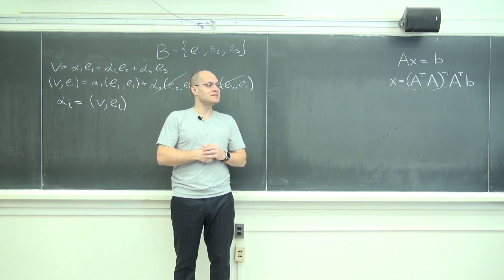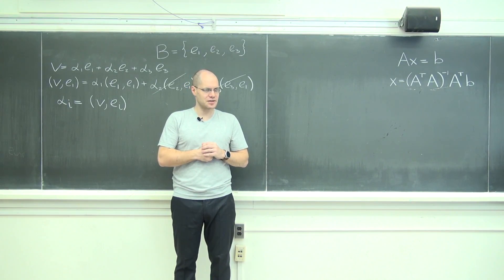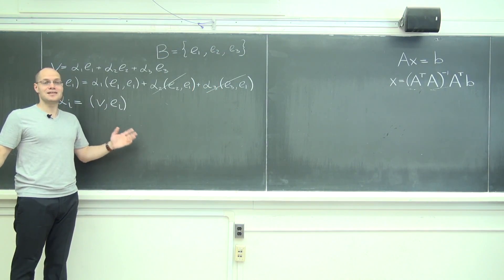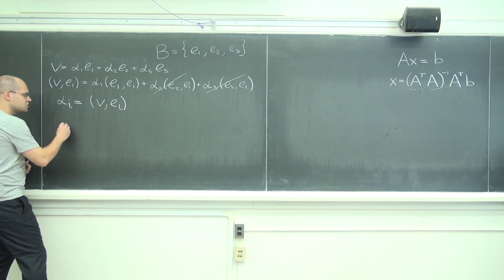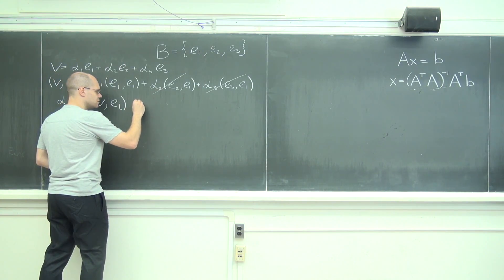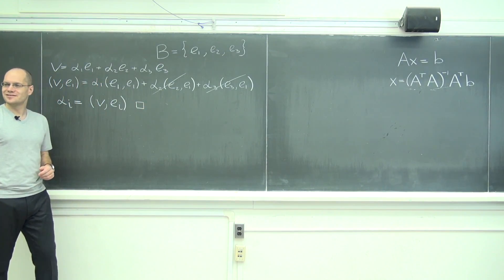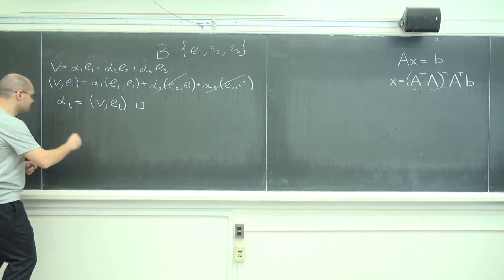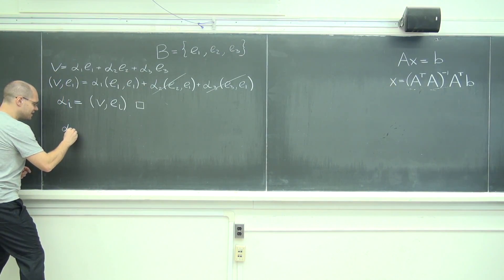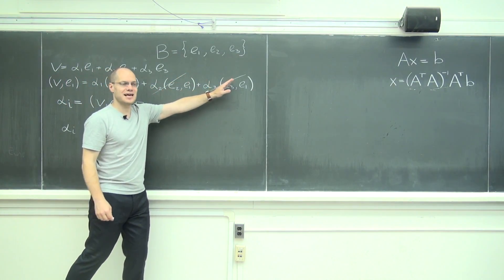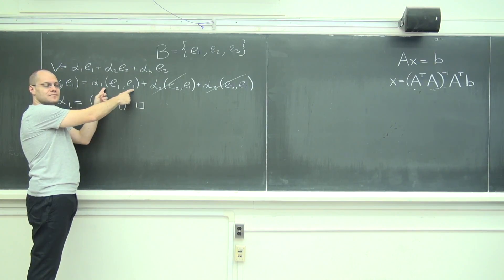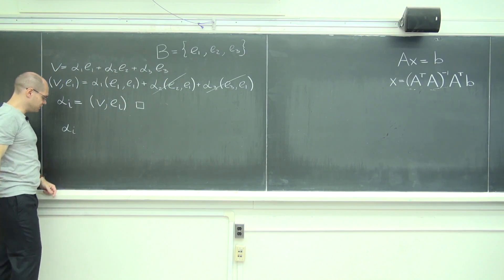That's if the basis is orthonormal. What if it's orthogonal? It's a little bit more complicated. You would still say the cross terms cancel, but e₁·e₁ is no longer one — it is whatever it is — so you would have to divide by it to get the coefficient.